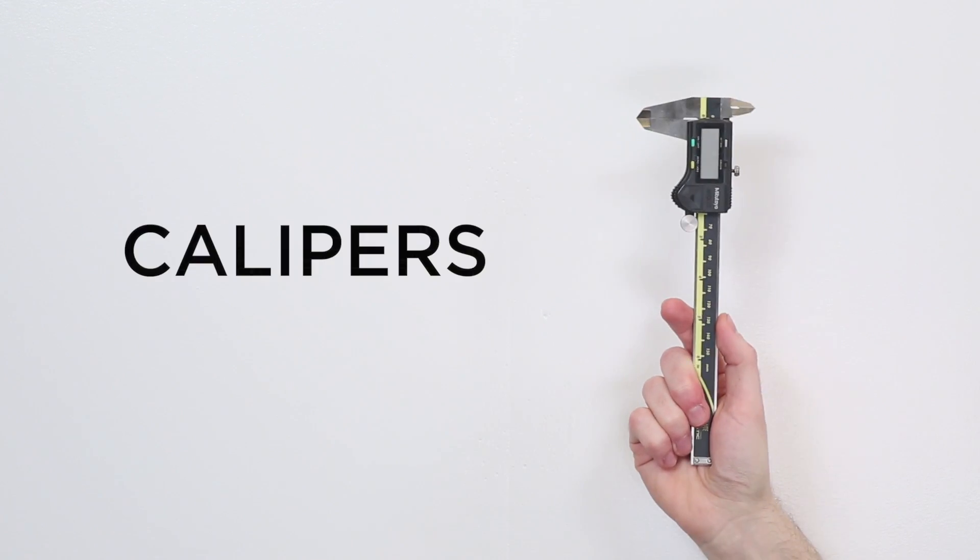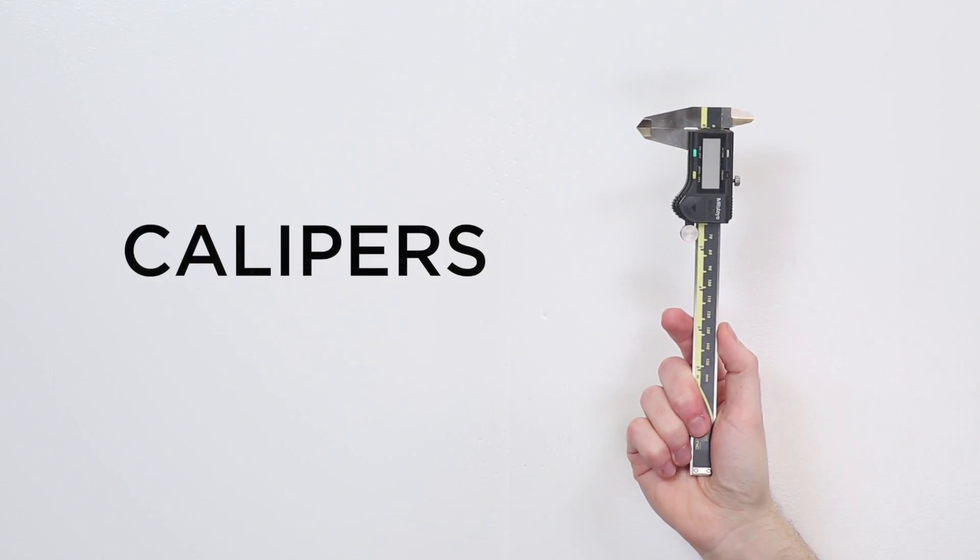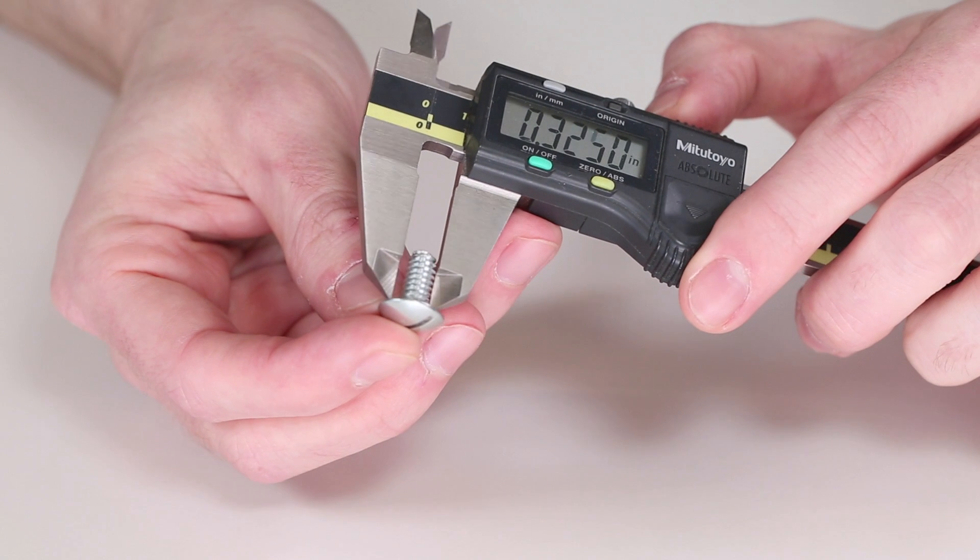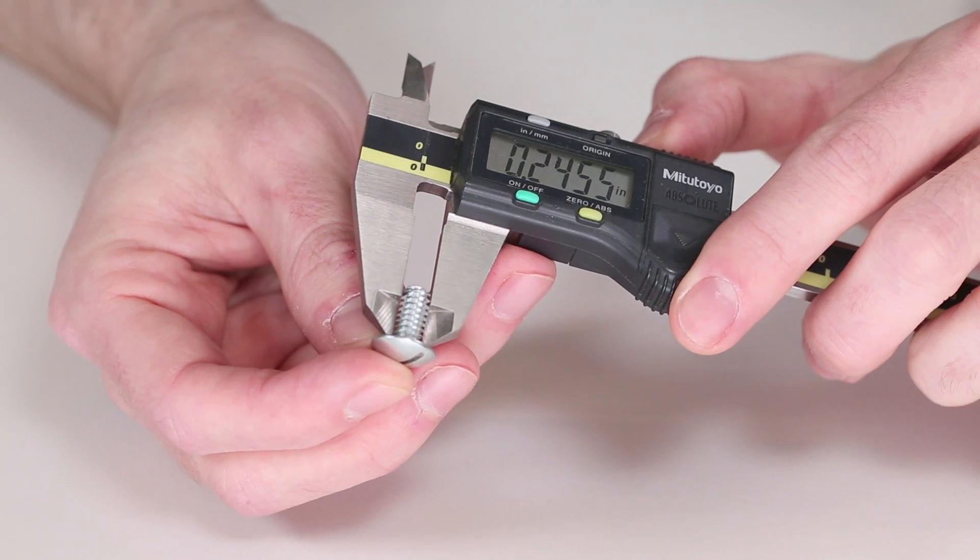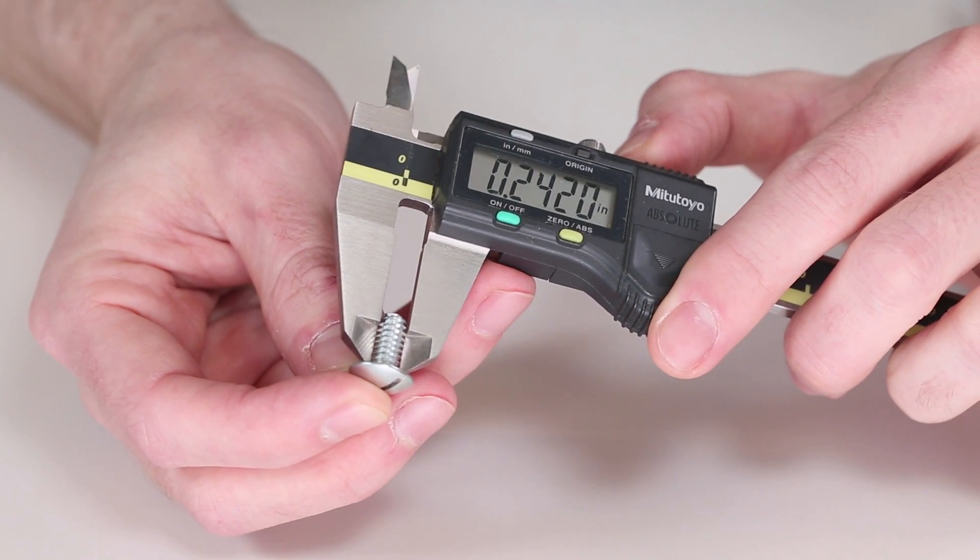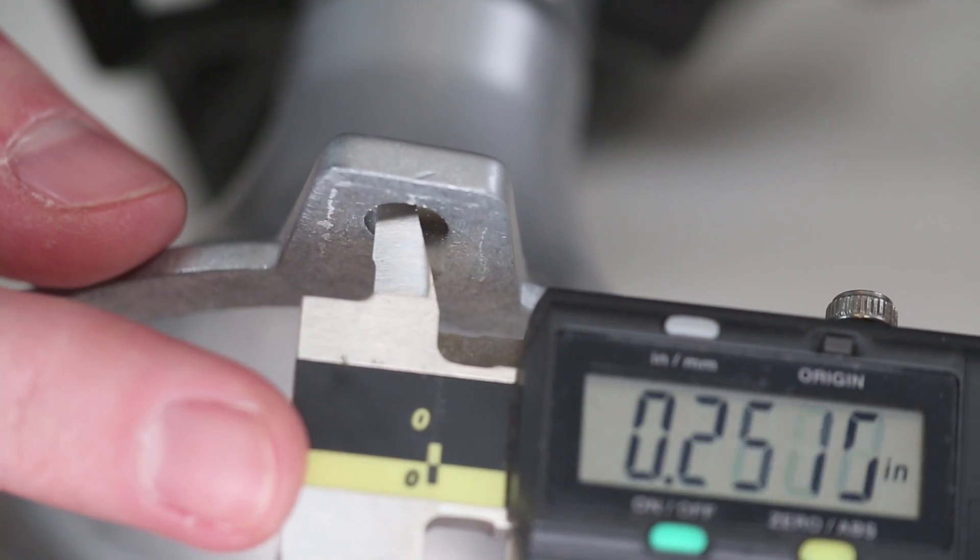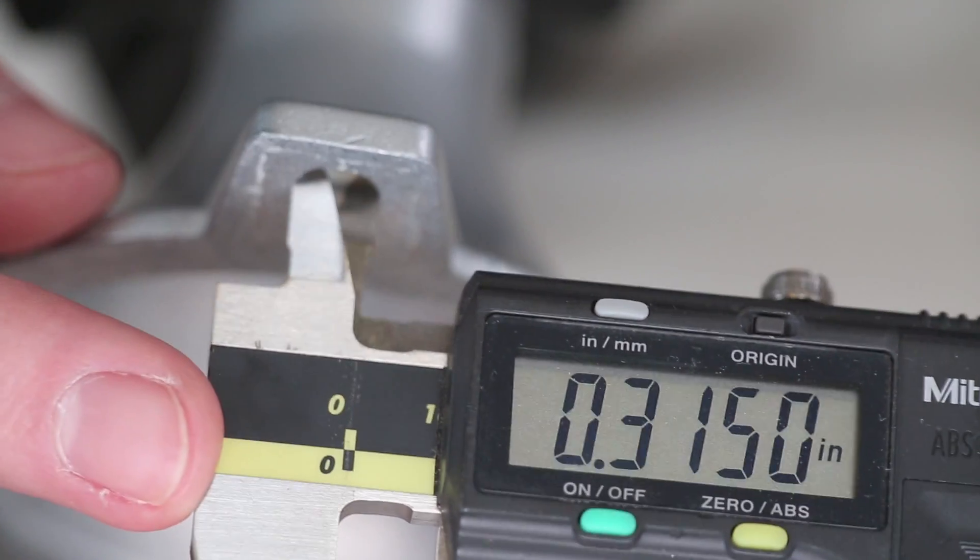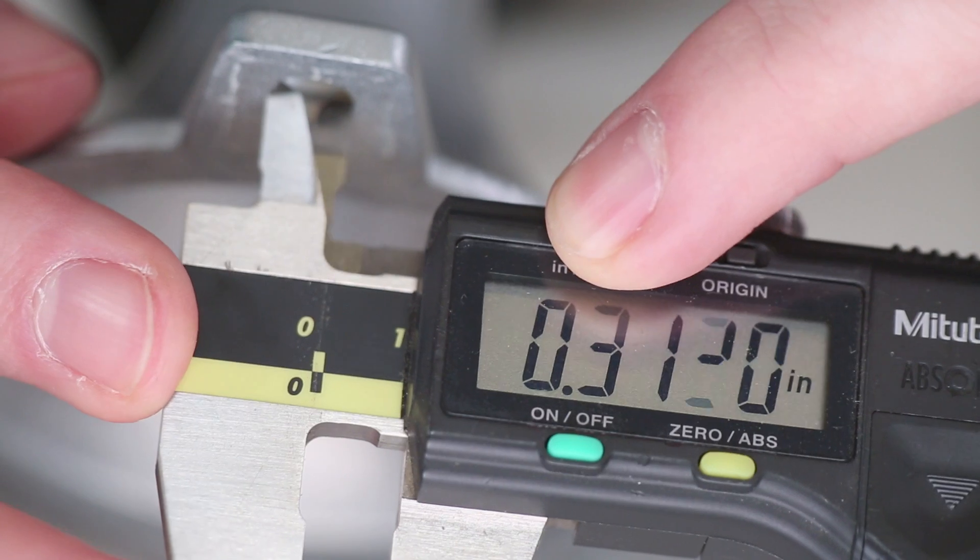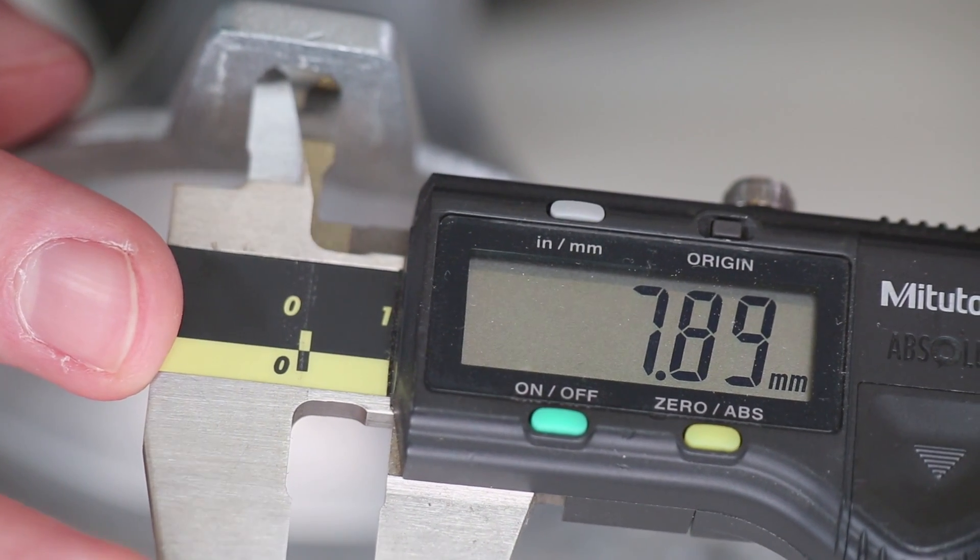When you need precise measurements, you need calipers. These are particularly useful when measuring components for PCB design or 3D printing. One side is used to measure objects, while the other is used to measure openings. And you can easily switch units between millimeters and inches.